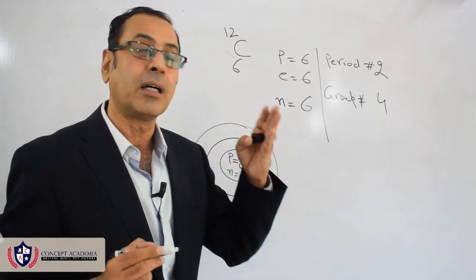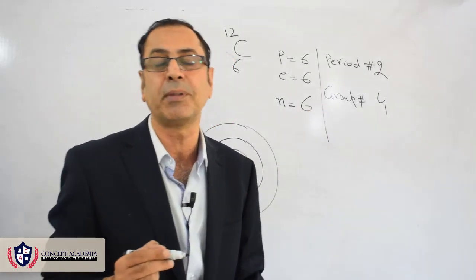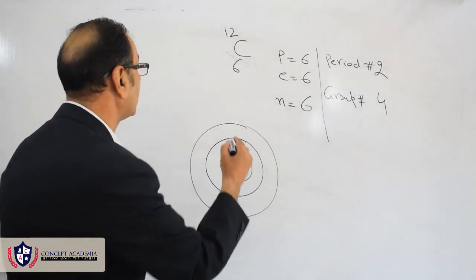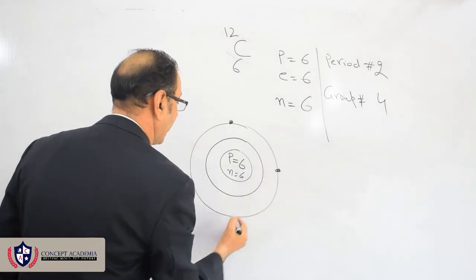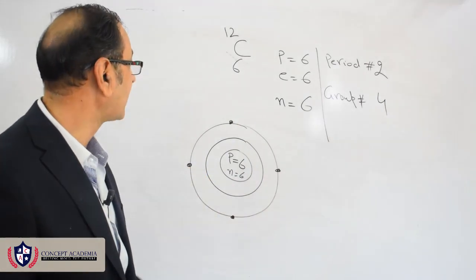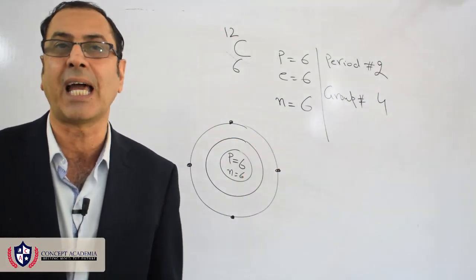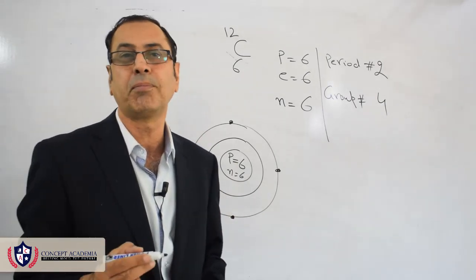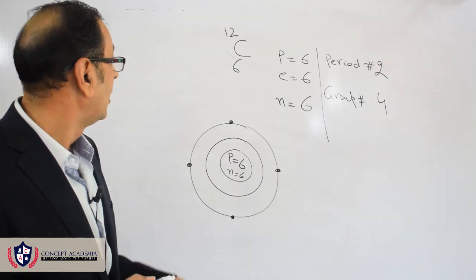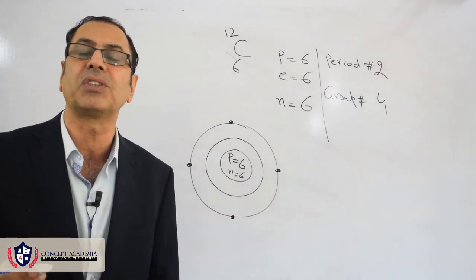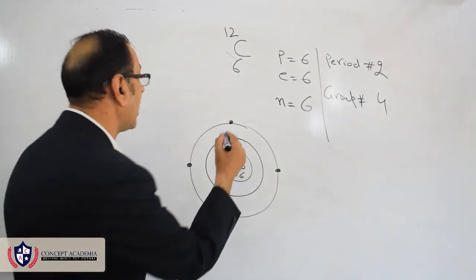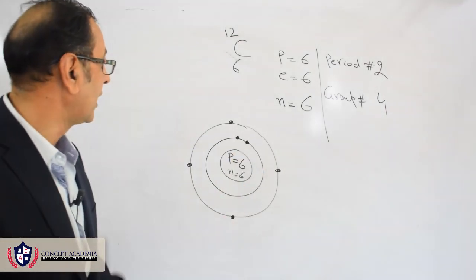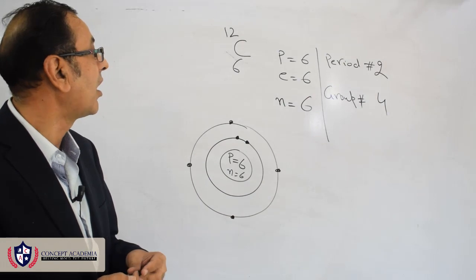The second priority is given to the group number. The group number is four, and it tells us the number of electrons in the last shell. So in the last shell there are four electrons. Then we put electrons in the first shell, and we know the maximum number of electrons the first shell can accommodate is two. This is how we draw the electronic configuration of carbon.